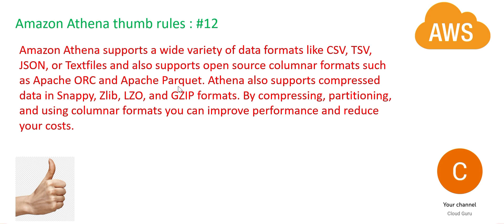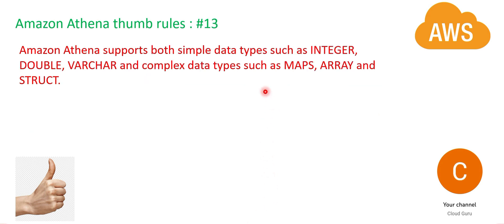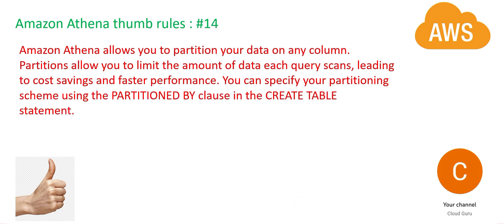In the exam you will get questions asking you to design solutions for performance issues or to reduce costs. The two key solutions are: compressing files, and partitioning. Athena billing is based on the amount of data scanned by the query — so the less data scanned, the lower the cost. Compressing data reduces the number of scans. Partitioning means instead of scanning a million records, if your partition only contains a thousand records, that scan will be much faster. Both compression and partitioning are very important from the exam standpoint, primarily for the AWS Solution Architect Associate.